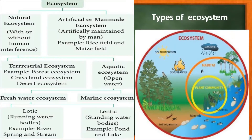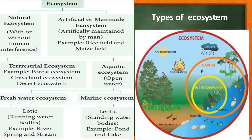We will learn about the types of ecosystem. The biosphere consists of different types of ecosystems. Ecosystem is broadly classified into natural ecosystem and artificial or man-made ecosystem. Natural ecosystem is formed without human interference, whereas artificial ecosystem is maintained and designed by man. Natural ecosystem can again be classified into terrestrial ecosystem and aquatic ecosystem.